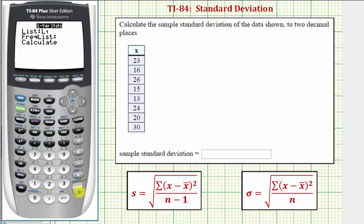And now to calculate, we press ENTER. The sample standard deviation indicated here is Sx. Sigma X would be the population standard deviation. So in this case, our standard deviation to two decimal places is approximately 5.91.